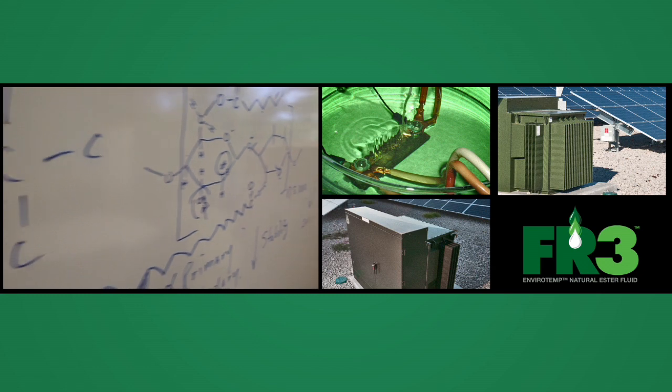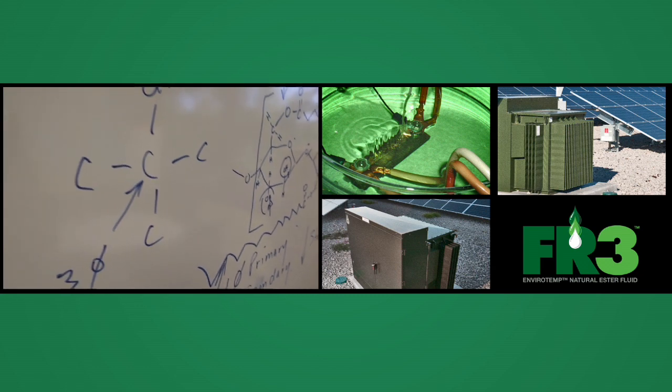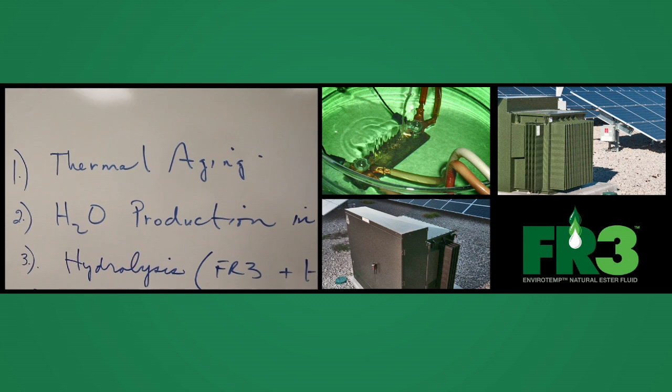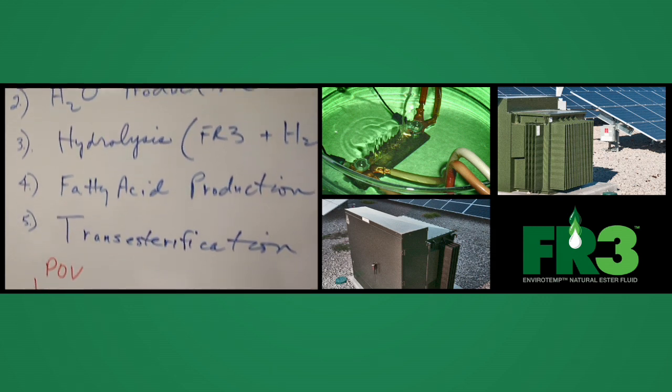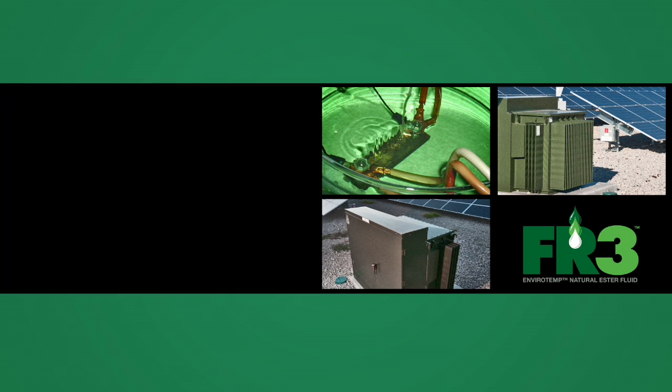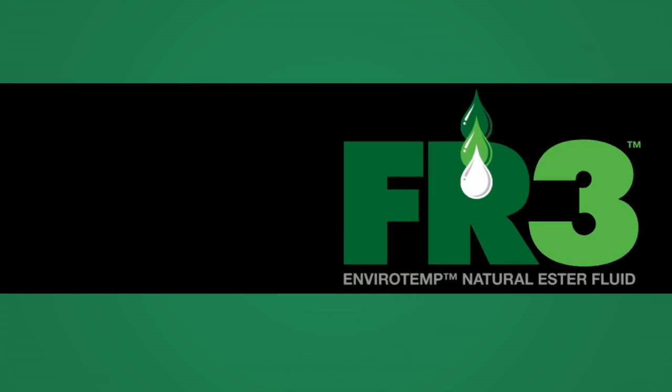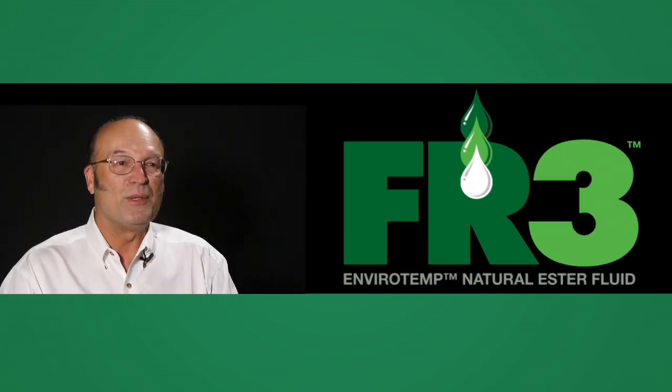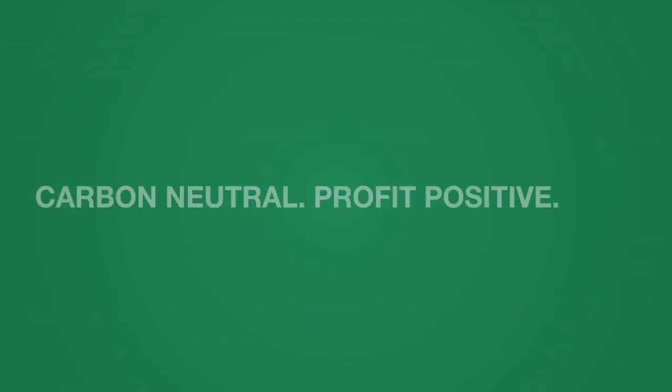When you hydrolyze a vegetable oil, you use up the water and you make a byproduct. So the key is you get rid of the water so it cannot further damage the solid insulation which determines the life of the equipment.